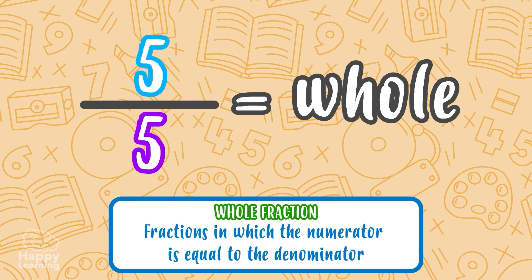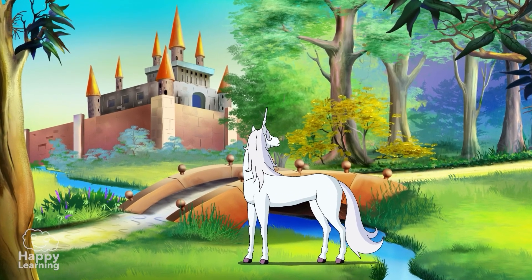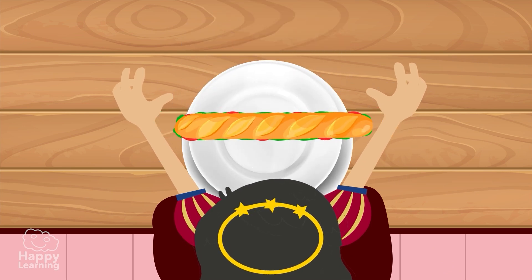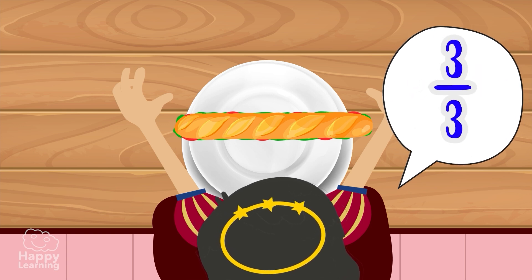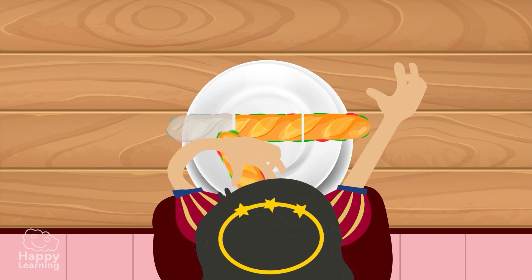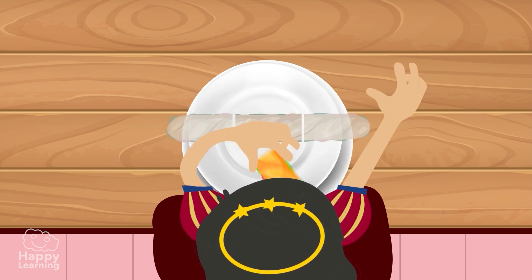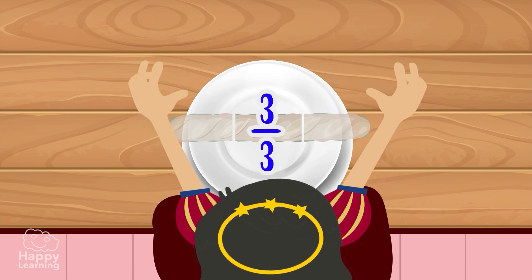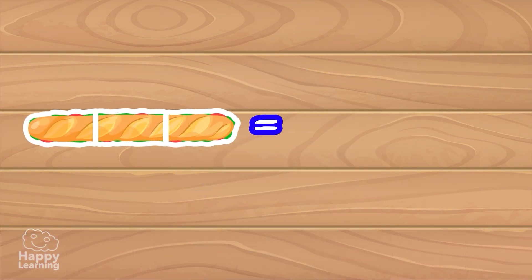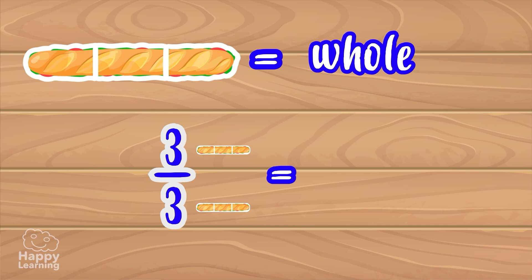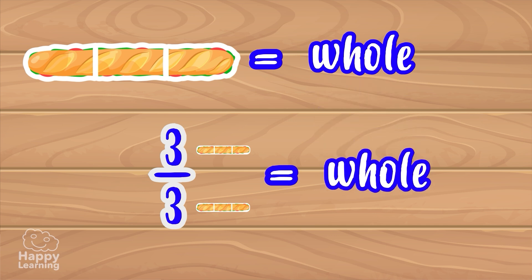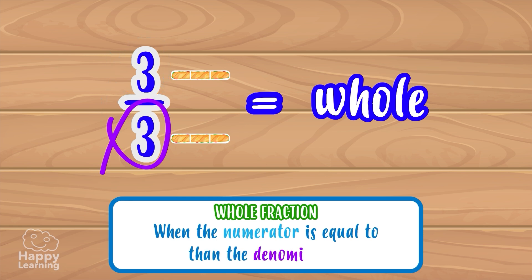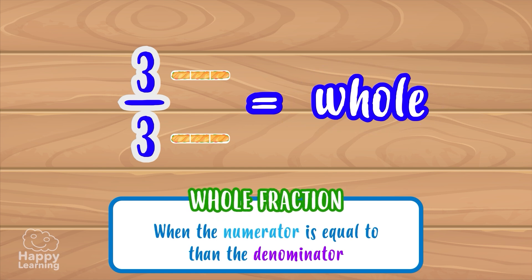Let's look at another example to understand it better. Suppose the queen of the castle wants to eat a sandwich. As the sandwich is very big, she asks for it to be cut three pieces, that is to say, three thirds. First she eats a piece, then she eats another piece, then she eats another piece. How many pieces of the sandwich do you think she ate? She ate the whole sandwich! Because three thirds is equal to a whole fraction! When the numerator is equal to the denominator, we always, always have one whole. That's why they are called whole fractions.